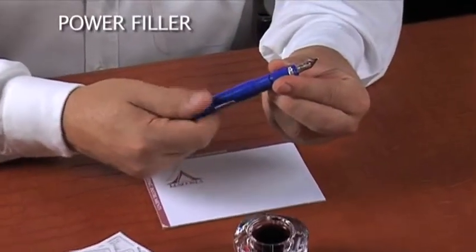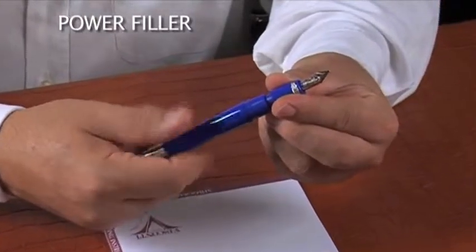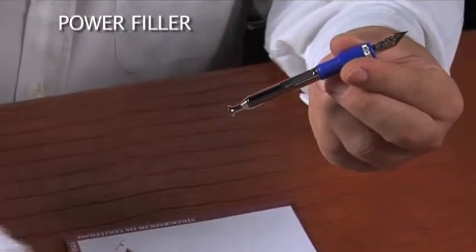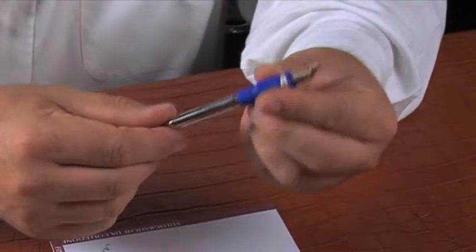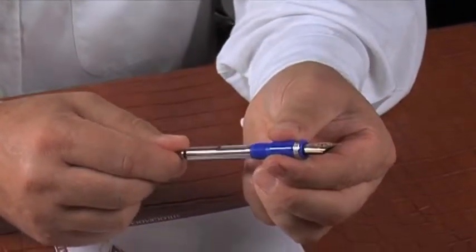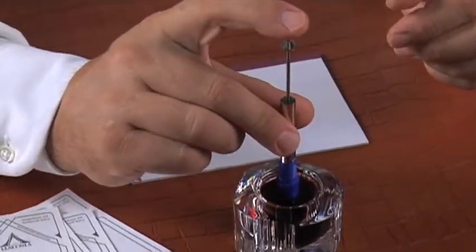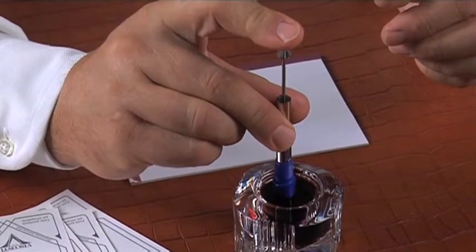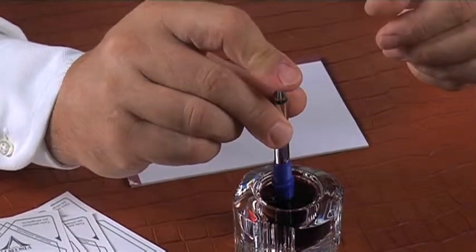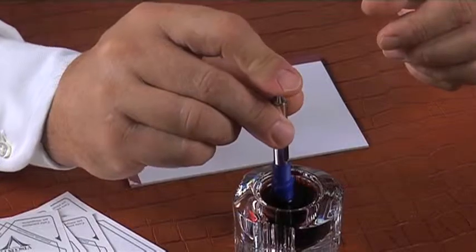Unscrew the plunger by pulling it back. Dip the entire nib and grip section into the ink, and press the plunger down with one swift, firm movement.